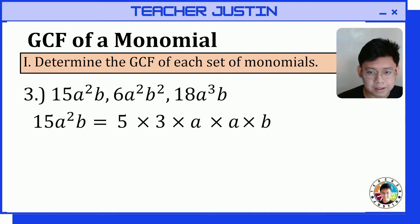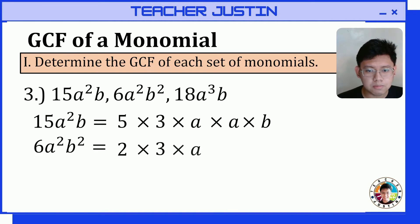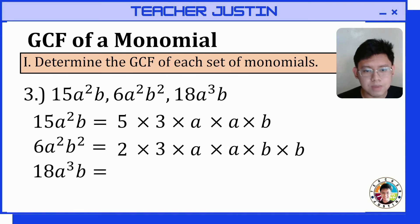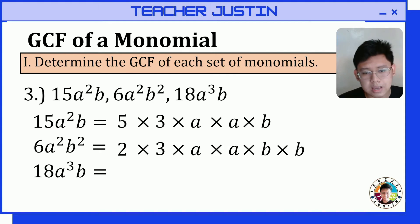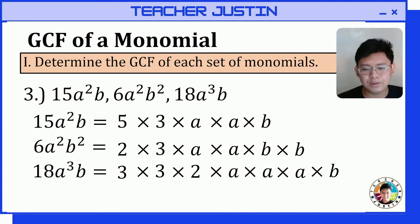The prime factors of 6a squared b squared are 2 times 3 times a times a times b. Then for 18a cubed b, the prime factors are 3 times 3 times 2 times a times a times a times b.